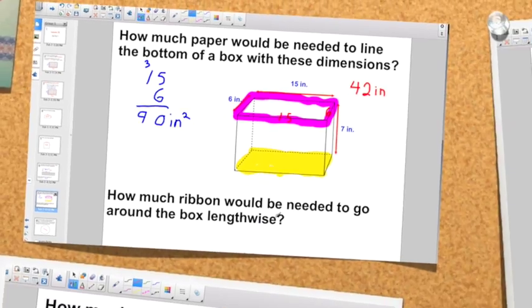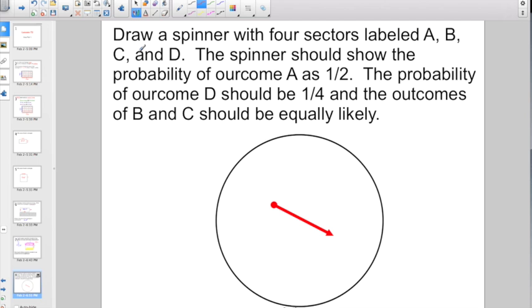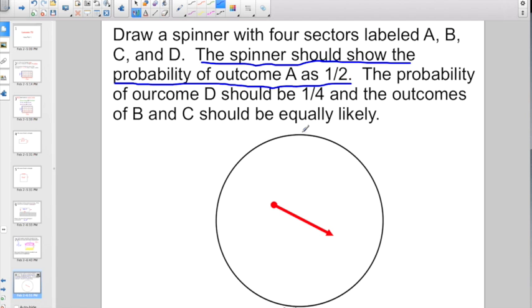Take a look at this guy, because you are gonna see it in the lesson today. It doesn't really tie into the skill lesson, but we haven't seen one like this before. It says draw a spinner - so draw a circle with four sectors labeled A, B, C, and D. Take a look here, it says the spinner should show the probability of outcome A as a half. So basically that is telling you that half of the spinner should be devoted to A.